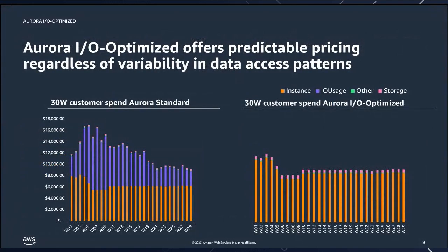Here's what a customer's bill looks like after moving to Aurora IO Optimized. Before the move, the bill over 30 weeks on Aurora Standard showed significant spikiness driven by the purple IO line, with costs ranging up to roughly $17,000. After moving to Aurora IO Optimized, the overall bill came down considerably — it doesn't exceed about $12,000. The trade-off is that the orange instance line is now higher due to the 30% premium, and the pink storage section is also slightly higher due to the 125% uplift. But the overall bill is much more steady and has gone down significantly.